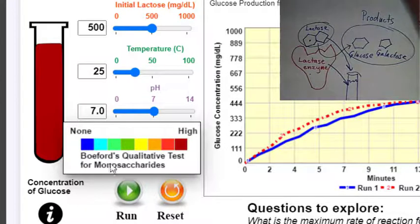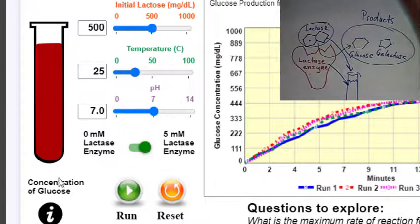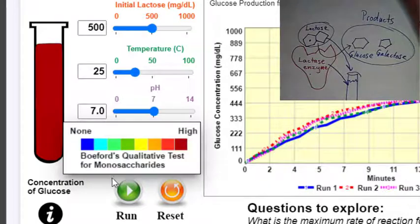You can also see how much of the monosaccharide glucose is accumulating in the test tube through a color change. As we run the simulation, you can see it changes color with the buildup of glucose.